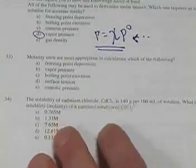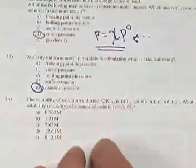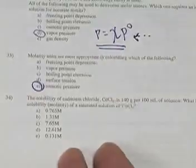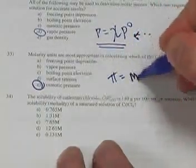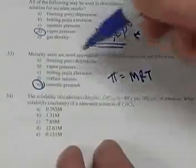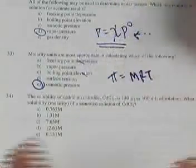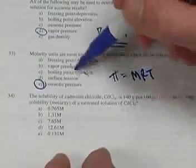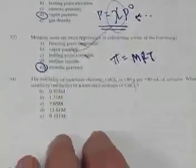Number 33: molarity is most appropriate for use in the osmotic pressure equation (π = MRT). Freezing point depression and boiling point elevation use molality. Vapor pressure calculations use Raoult's law, which uses mole fraction.